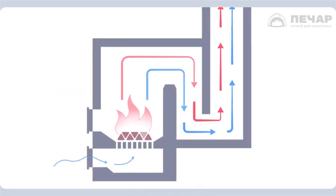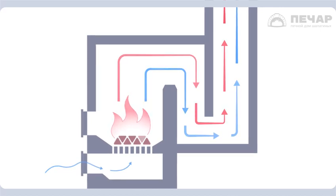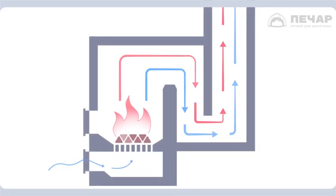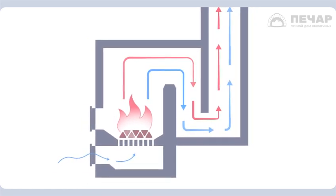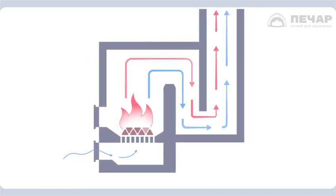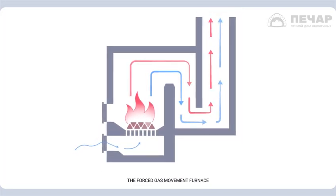In the forced gas movement furnace, the gas movement occurs due to the pipe draft. The hot and cold gas streams are mixed into a single stream. This mixing reduces the overall temperature of the gas stream. Carbon dioxide and water vapor are released into the atmosphere.